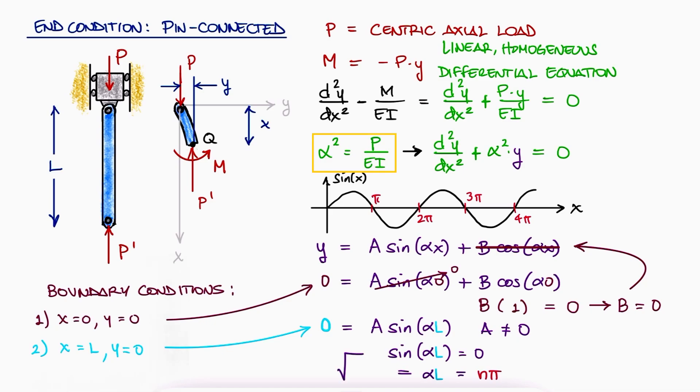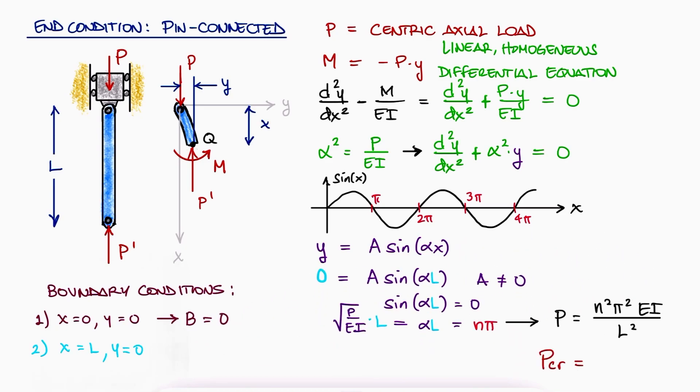And since alpha squared was P over EI, we can solve for P and the critical load P_cr would be the first and lowest of those multiples n for n equal to 1. This is the expression that we know as Euler's formula.